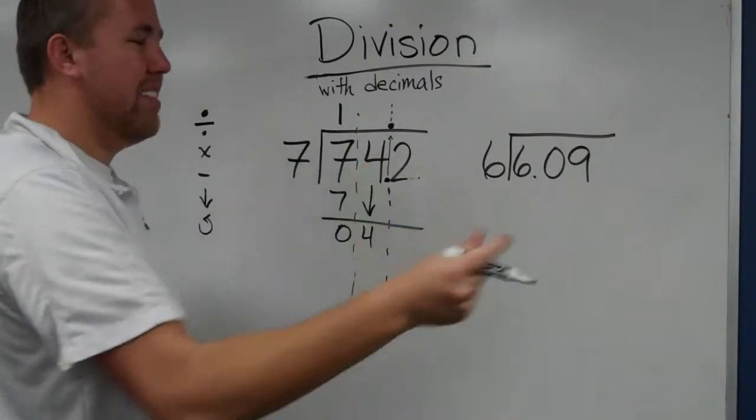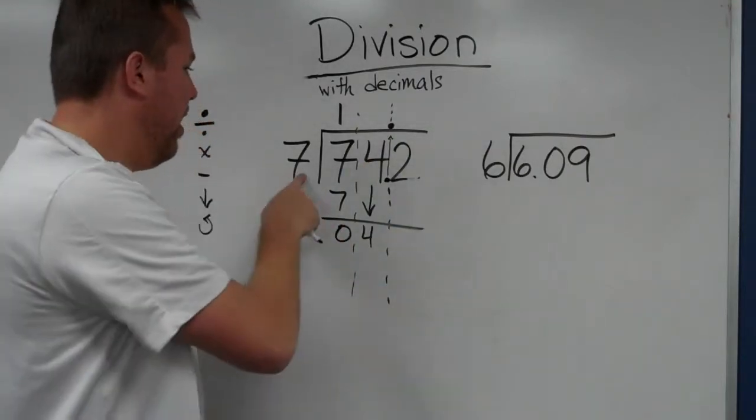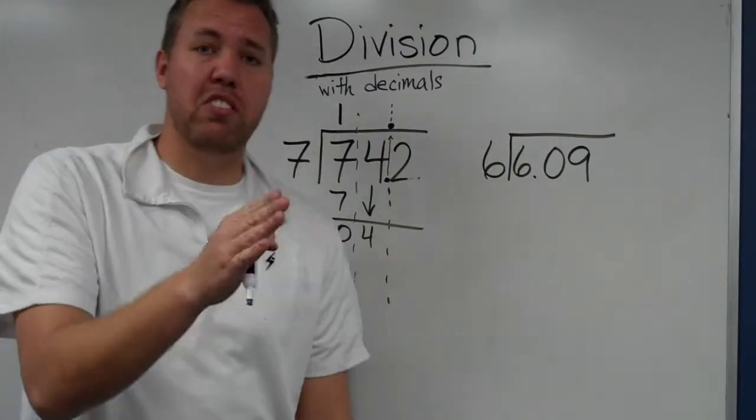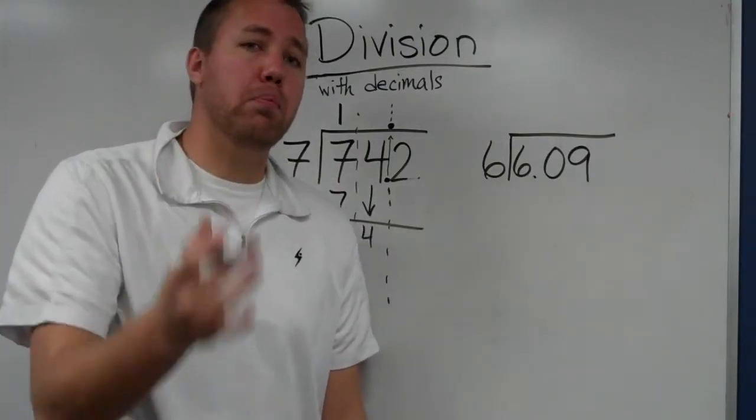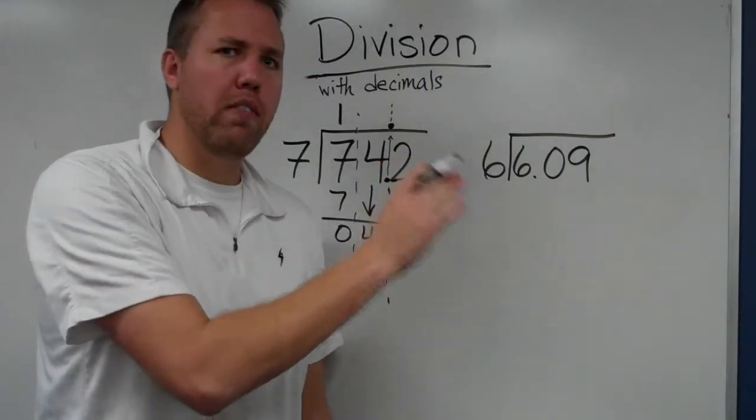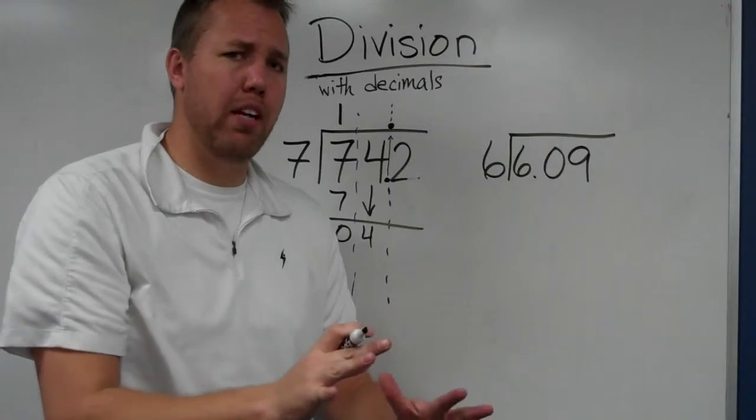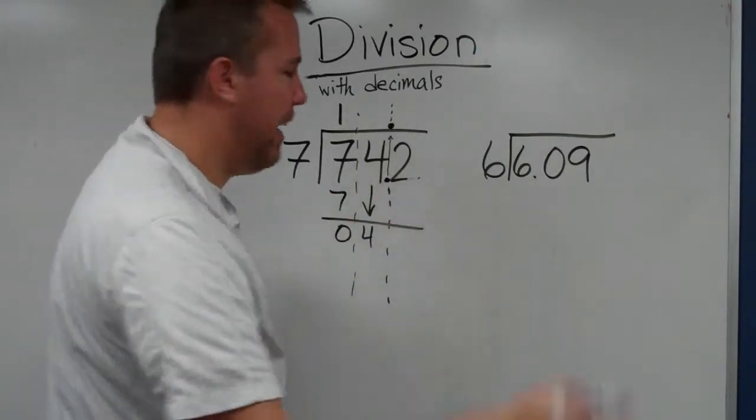7 goes into 4 zero times. Here's a little problem we run into. Oh, it can't go into it, so I just skip it and move on. No, no, no, no, no. Now remember this: if brother brings down, Rufus has to repeat. We only finish when brother can't bring down anymore. But if he can, which he did, Rufus has to repeat.